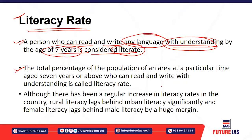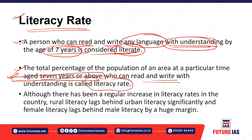The literacy rate is calculated by finding how many people aged seven years and above can read and write with understanding in any language — this ratio is the literacy rate. There is a continuous increase in literacy in India, but rural areas lag behind urban areas in literacy rate, and the male literacy rate is higher than the female literacy rate.